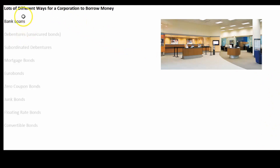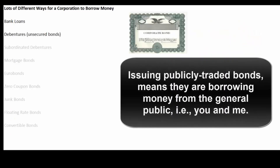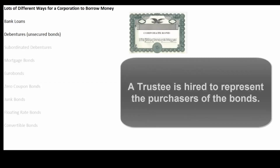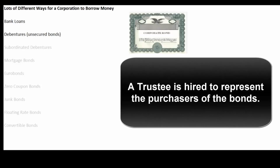A corporation could go to their local bank and have a one-on-one relationship with their lender and just borrow money that way, or they could issue publicly traded bonds. That way they can access the public markets and probably get a slightly lower rate, though it may have a slightly higher cost because they'll have to hire a trustee to represent the bondholders.